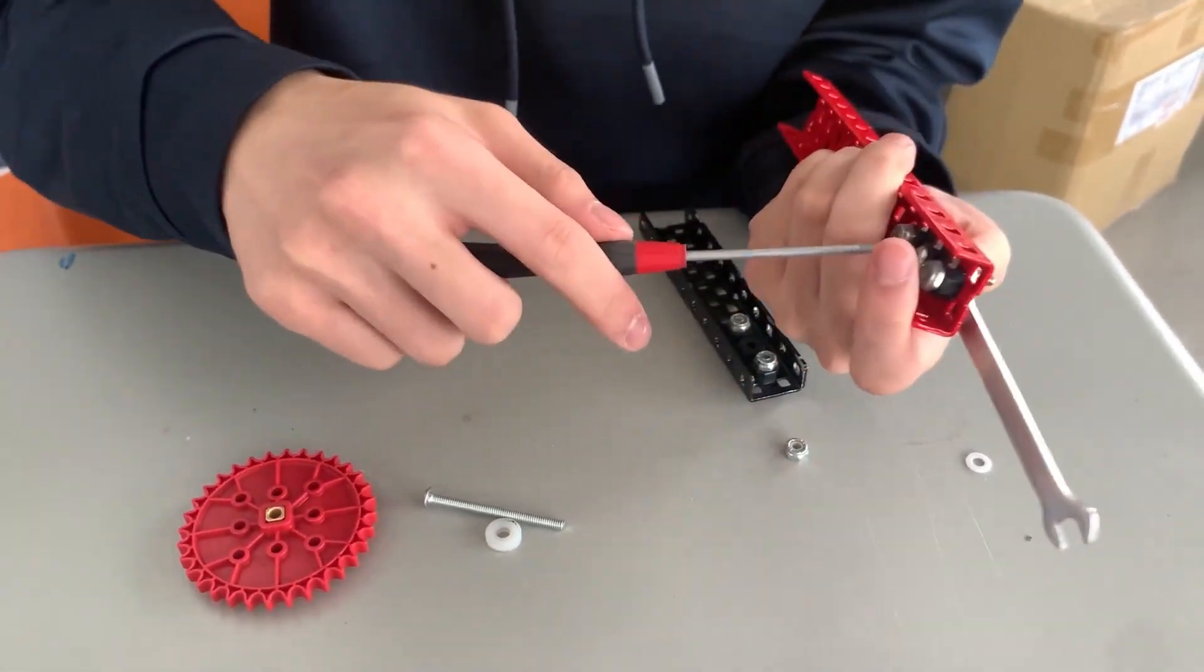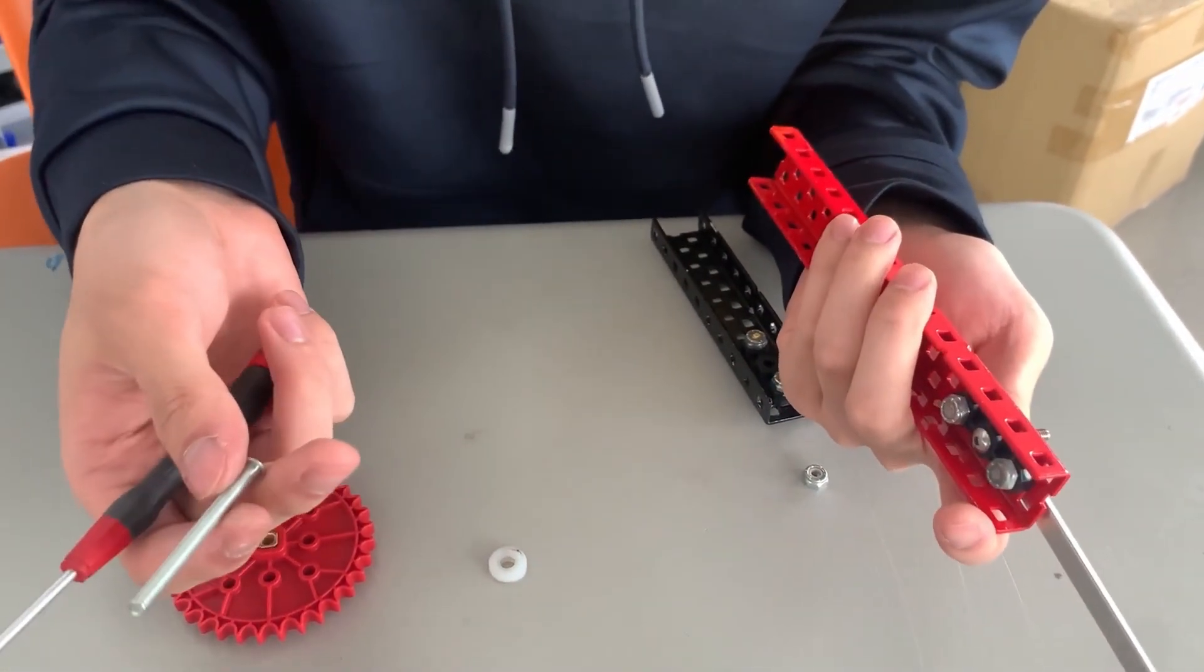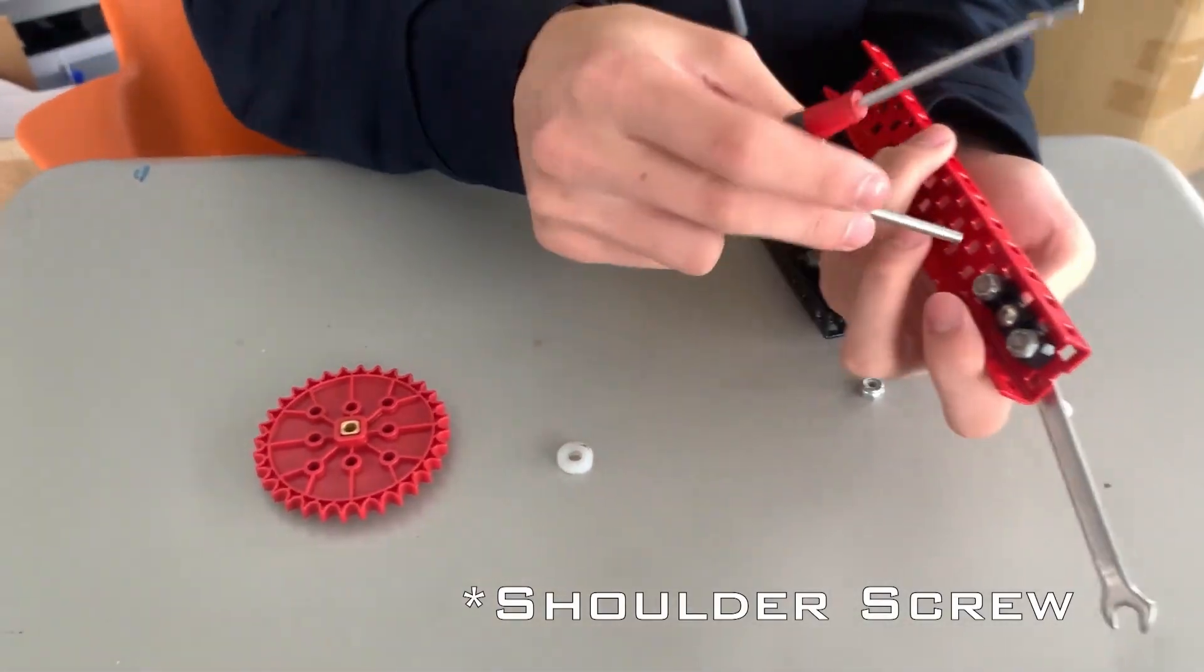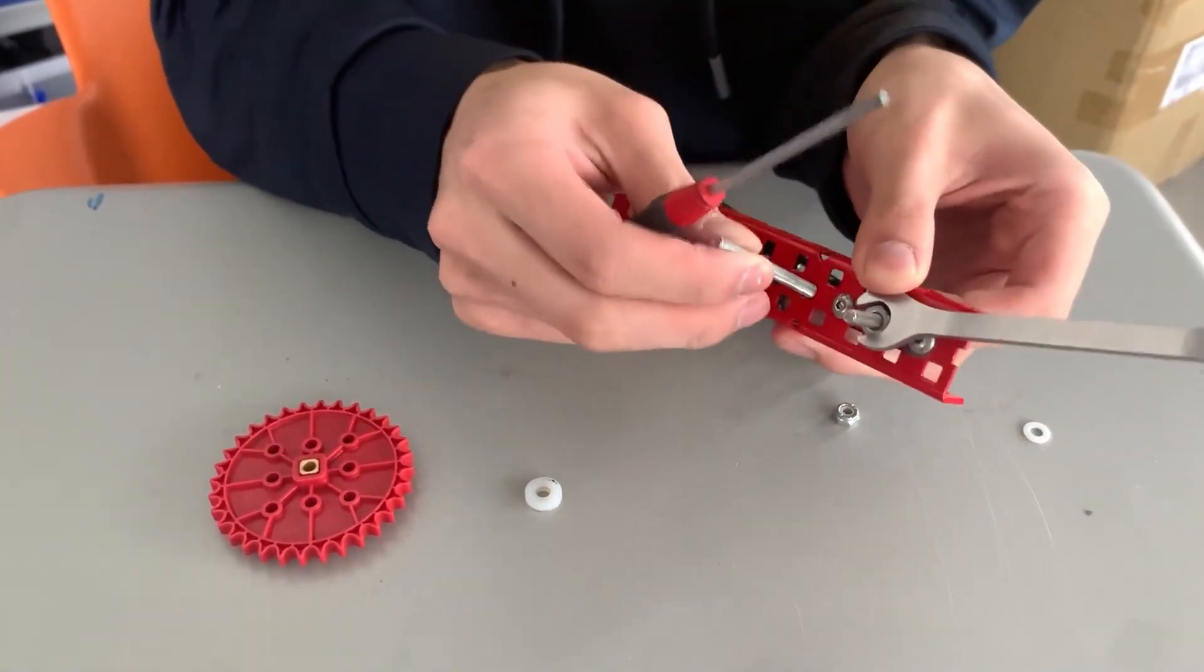Now, I do want to notice that I put a bearing here with the purpose to center the screw. But if you have something similar to a screw joint, you don't actually need the bearing over here. You can just put it through. And as you can see, the screw will auto-center itself.